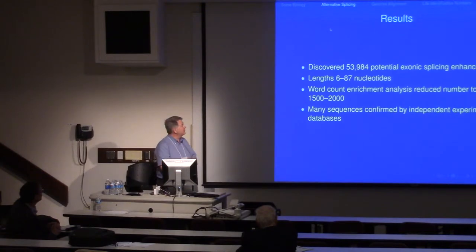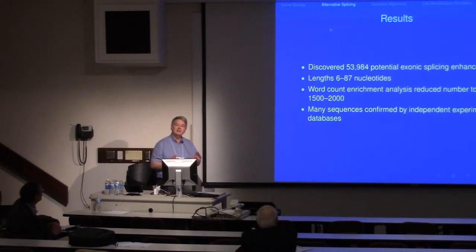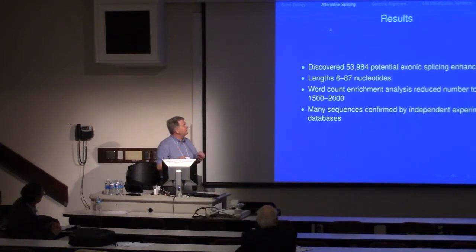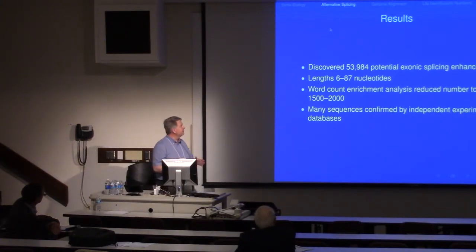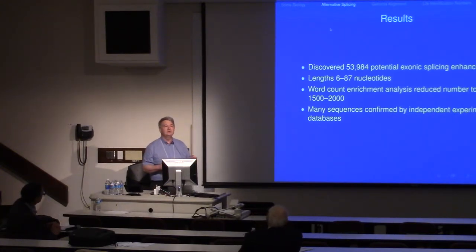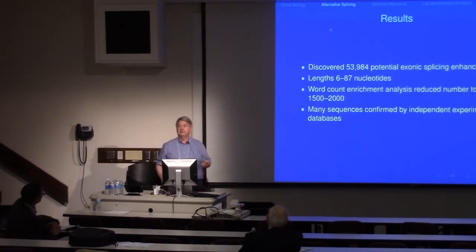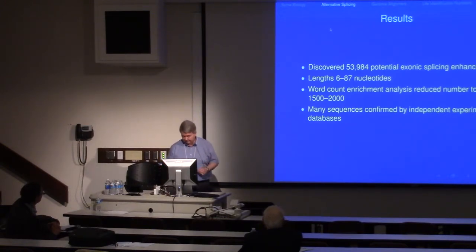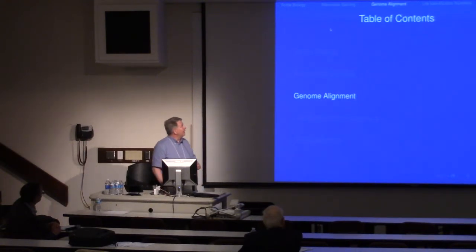The identified elements had a variety of lengths, which was something we were particularly interested in — that splicing regulatory elements could be of different lengths. We did some enrichment analysis to reduce that number to about 2,000, and then we looked in experimental databases and were able to verify that at least some of our sequences were in databases that had been experimentally verified. That was the first project.